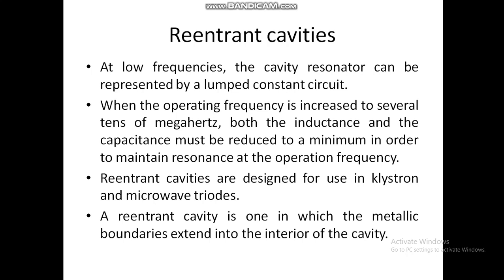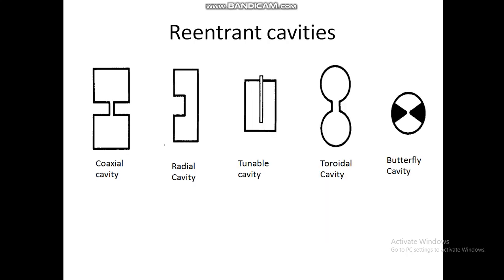Re-entrant cavities are designed for use in klystrons and microwave tubes. A re-entrant cavity is one in which the metallic boundaries extend into the interior of the cavity. There are many types of re-entrant cavities: coaxial cavity, radial cavity, tunable cavity, toroidal cavity, and butterfly cavity.